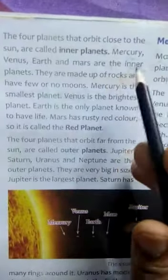Mercury, Venus, Earth and Mars are the inner planets. They are made up of rocks and have few or no moons. Mercury is the smallest planet.